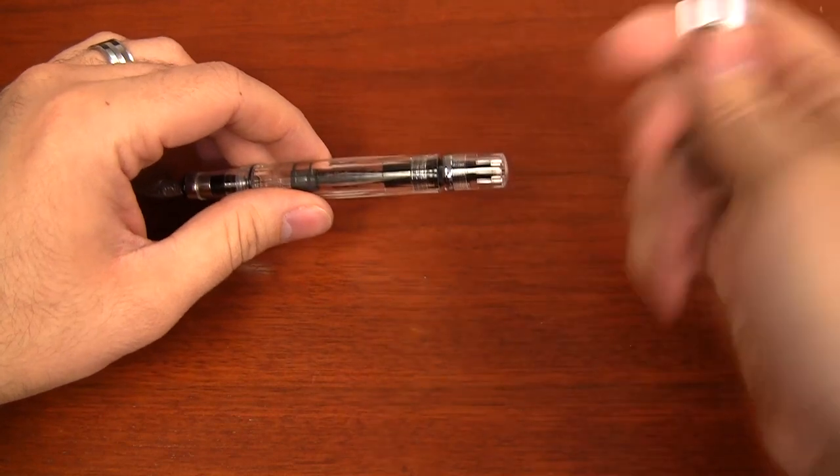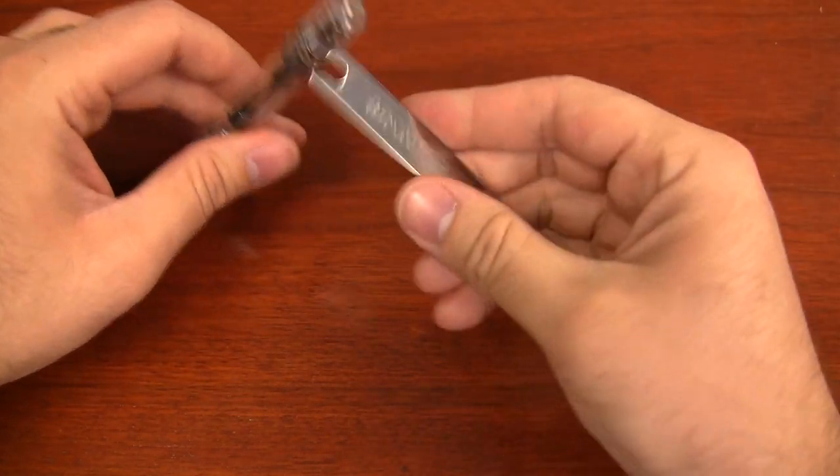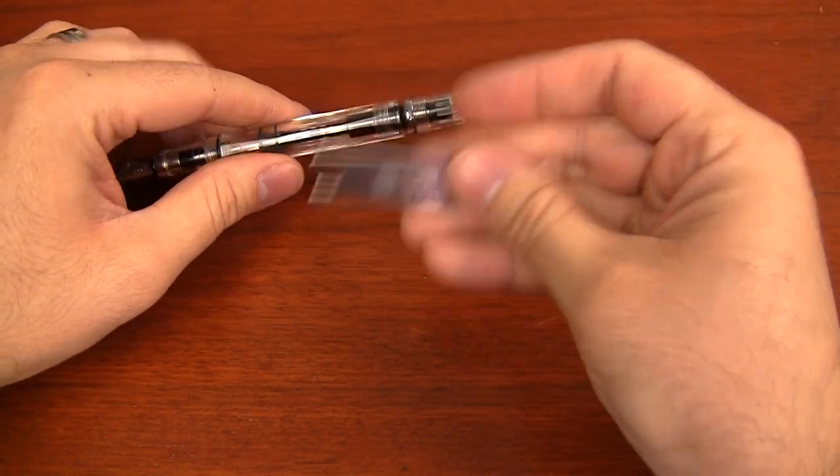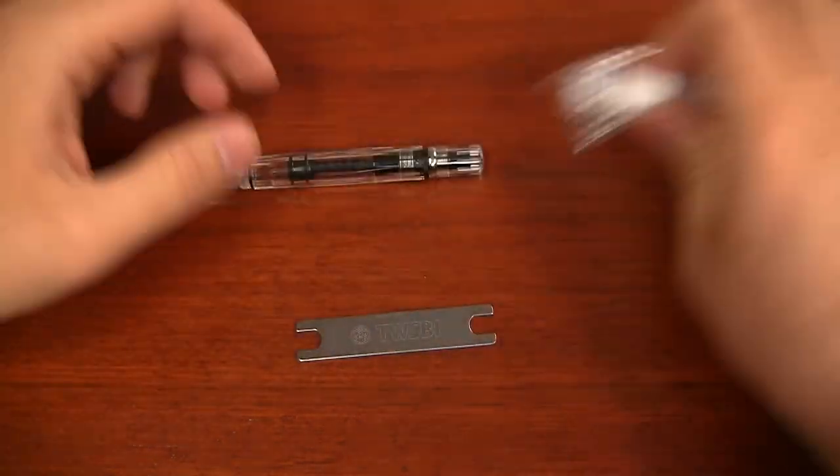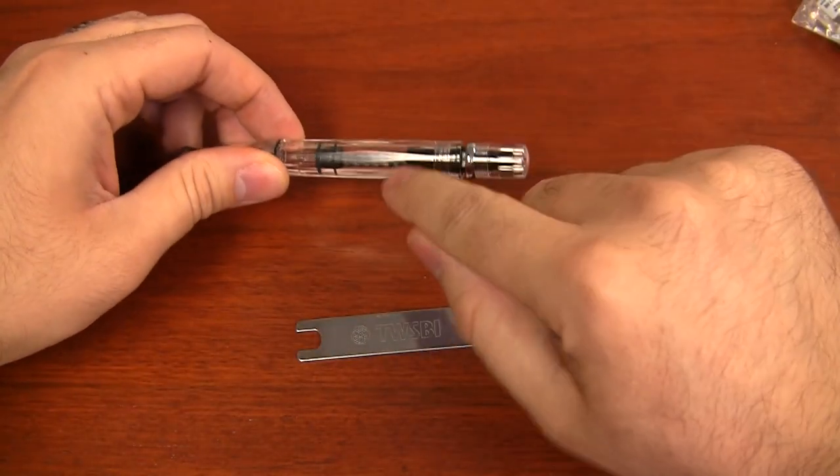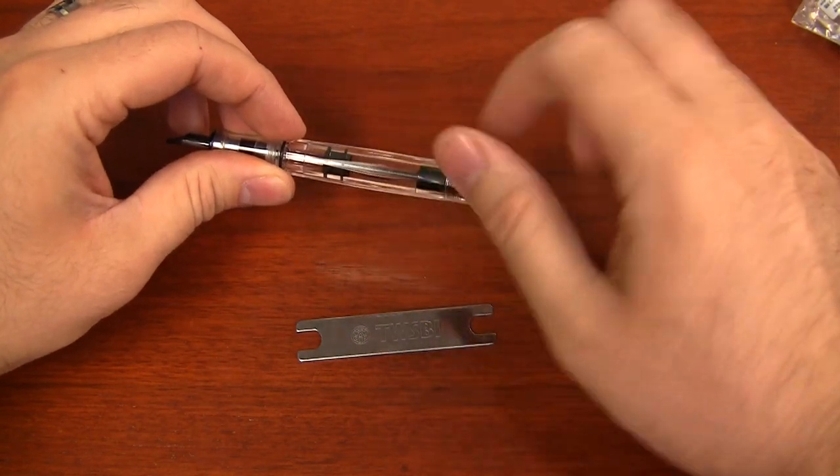So if you want to clean or maintain your pen in any way, they include this wrench. And they also include a little bottle of silicone grease. That's used to lubricate the different parts of the pen, the screw, the piston part, the seal.